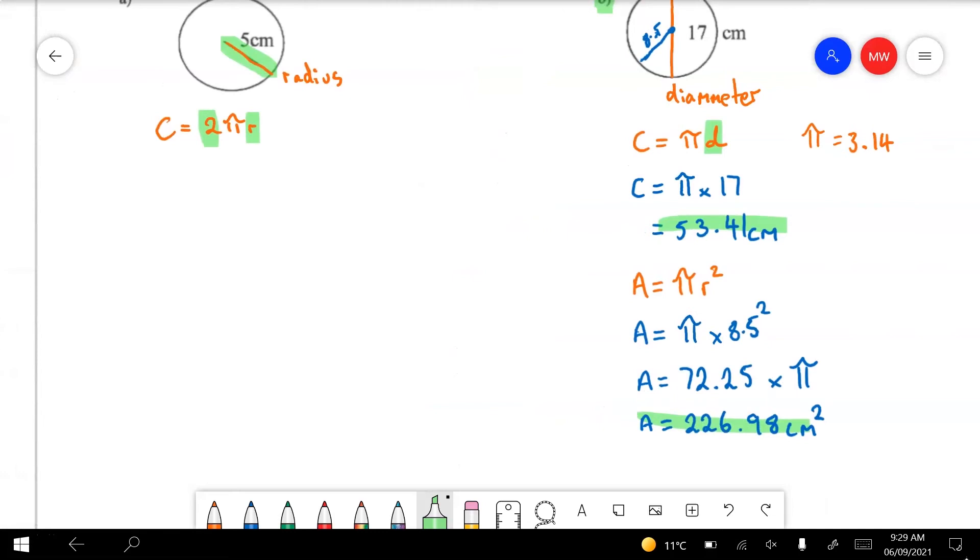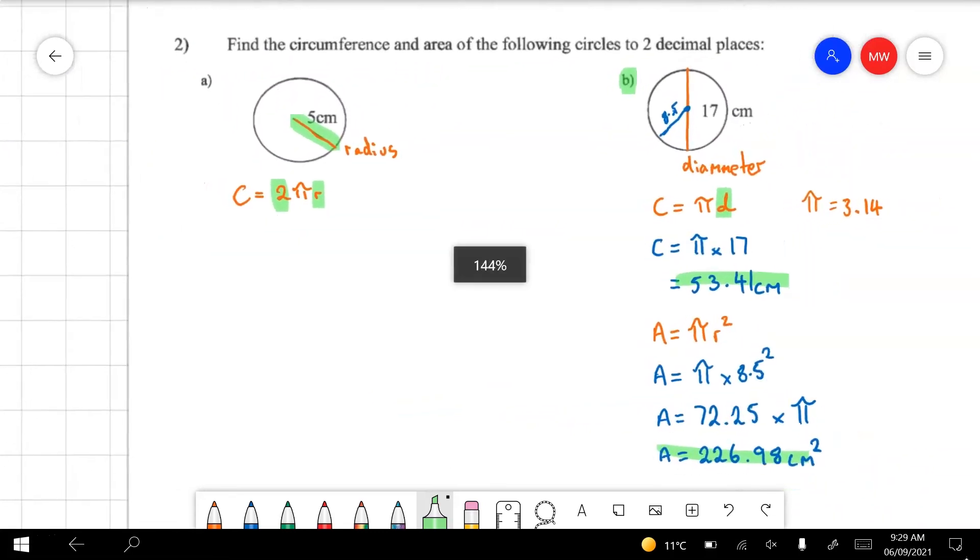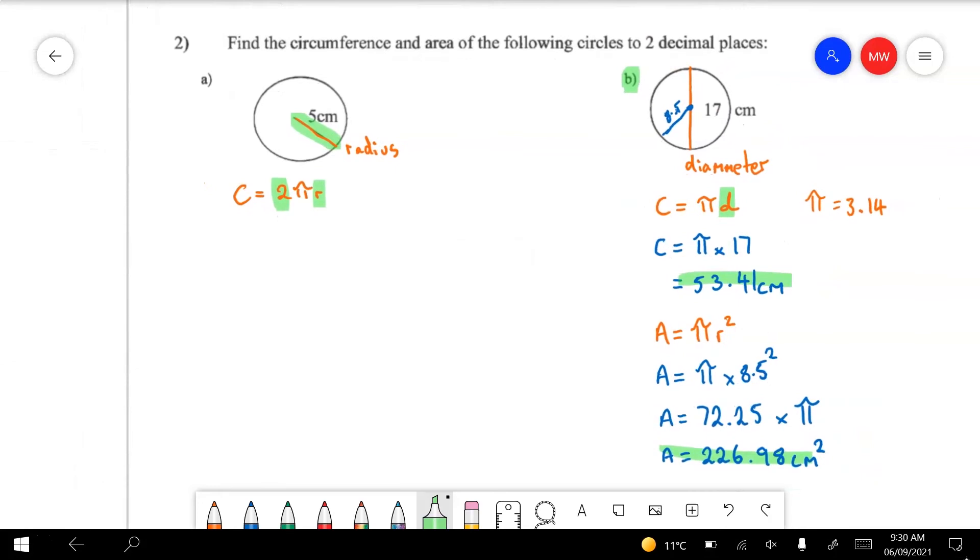We'll go 8.5 squared instead, luckily I can rub out on this. If I put that straight into my calculator, 8.5 squared is 72.25, but we don't really need to worry about that. If you've got your calculator you can skip straight to the answer, which is 226.98 square centimetres. Don't forget your units. This one's a bit simpler in some ways because you can just sub it straight into the formula.